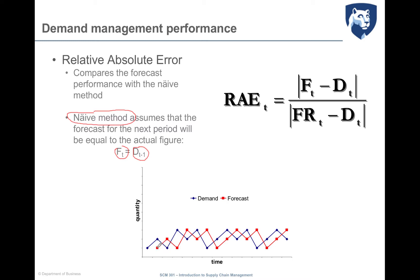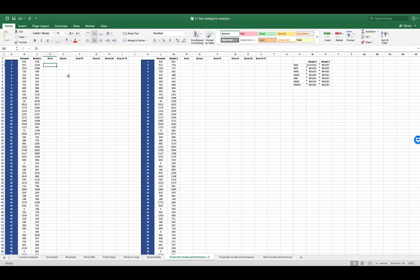For every period, the forecast is exactly the value of the demand in the previous period. This is a zero-investment model, and we are interested that the error I obtain with my model is at least worse than the error I obtain with the naive model. This indicator is called relative absolute error — the ratio between the error obtained with my model and the error obtained with the naive model. I'm interested that this value is as much lower than one as possible, so near zero.